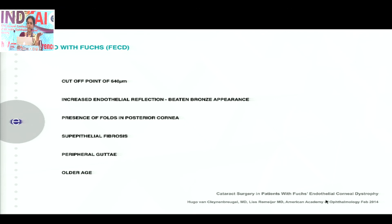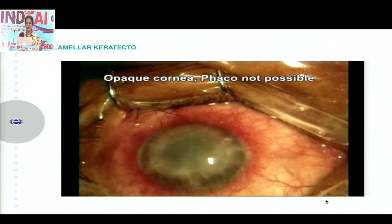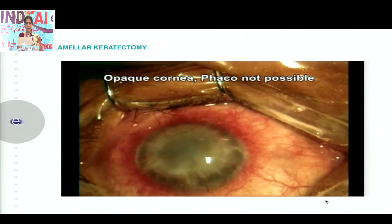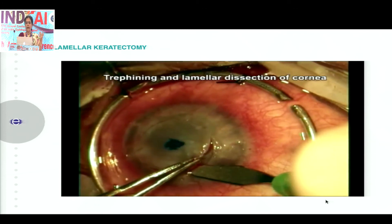If corneal thickness is significantly high, you have to combine the surgeries together. You need to do an anterior lamellar keratectomy, and if you have enough deep stroma, you are able to visualize and proceed with the cataract surgery, then remove it and do a PK graft.